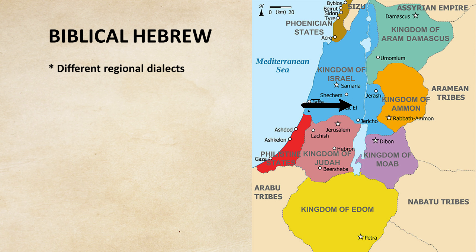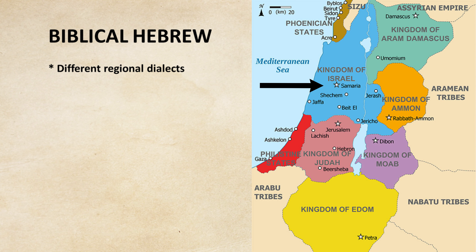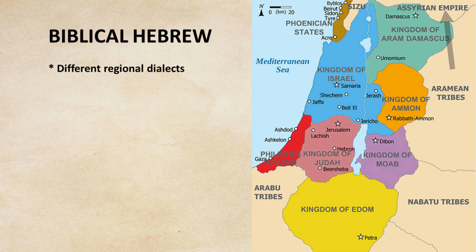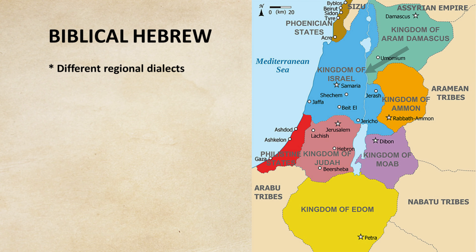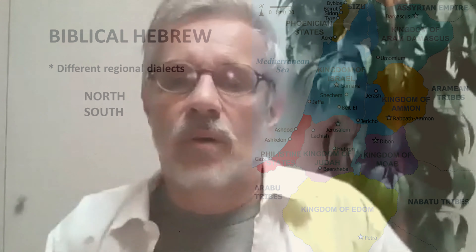Another example: you have two words for 'I' — 'anokhi' and 'ani.' Ani is used more often, and anokhi less. Anokhi seems to be an older form, but prophets sometimes use older language even when it's less common. Some prophets use a lot of anokhi, others use more ani. In modern Hebrew, anokhi is really not said — it's now only ani. But this could also be a difference in style, or older versus later language.